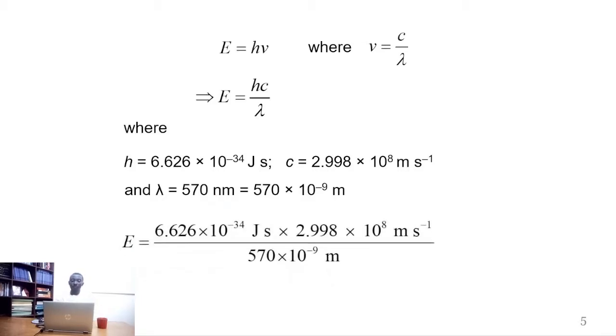Now we substitute these values into this formula. This is Planck's constant, this is the speed of light, this is wavelength. This gives the energy per photon as 3.85 times 10 to the power of negative 19 joules, which can be approximated to 3 times 10 to the power of negative 19 joules.